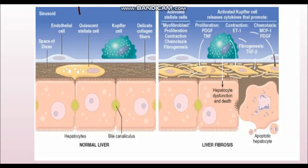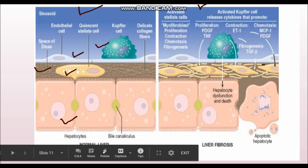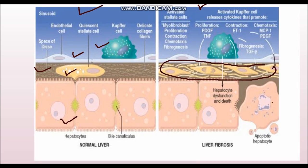In the diagram, the normal liver shows hepatocytes, space of Disse, stellate cells, endothelial cells, and Kupffer cells. In the cirrhotic liver, there is stellate cell proliferation, hepatocyte death alongside hepatocyte regeneration, and activation of stellate cells leading to myofibroblast conversion and fibrogenesis. The Kupffer cell gets activated and releases cytokines including TGF-beta and PDGF. PDGF helps in multiplication and proliferation of stellate cells, further increasing fibrogenesis.